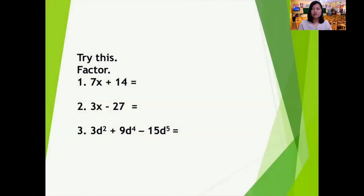Number one: the greatest common factor is 7, so that is one of the factors. To determine the other factor, we divide each term of the given polynomial by 7. 7x divided by 7 is x, and 14 divided by 7 is 2. Number two: the greatest common factor is 3. 3x divided by 3 is x, and negative 27 divided by 3 is negative 9.